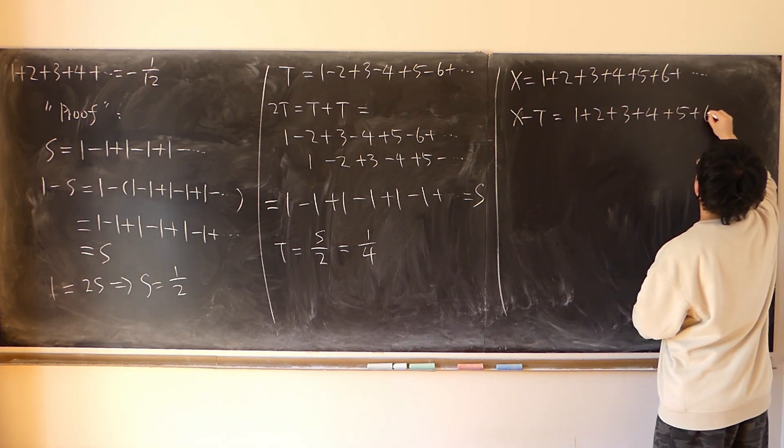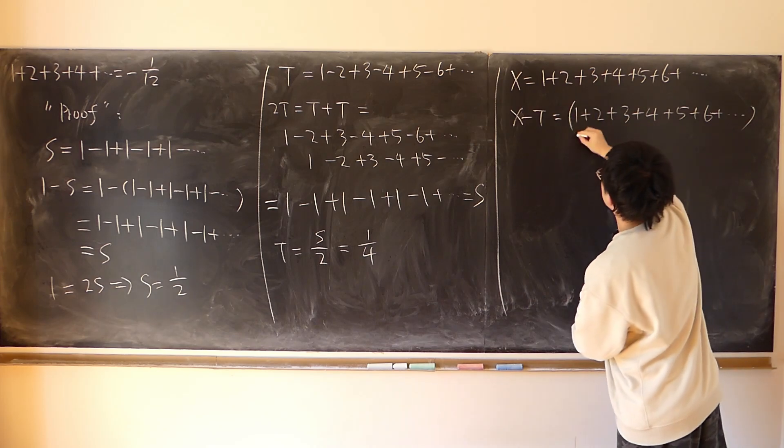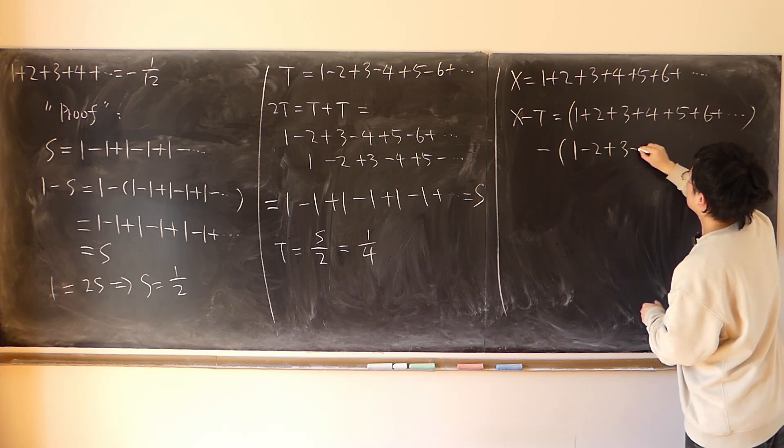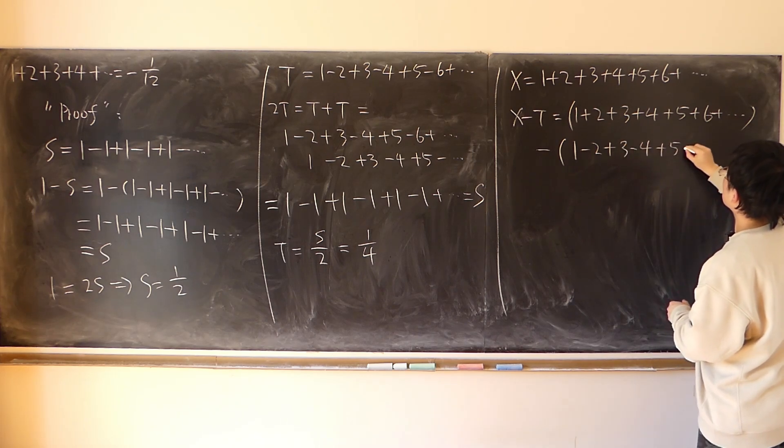4 plus 5 plus 6, minus t. That is 1 minus 2 plus 3 minus 4 plus 5 minus 6.